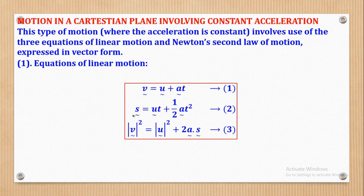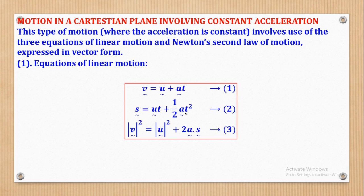For the second equation of motion, S is a vector which is displacement, U is a vector which is initial velocity, T is a scalar — that's why there is no tilde. A is acceleration which is a vector, but T is a scalar. So for vectors you have to include those tildes, and for scalars you don't include them.